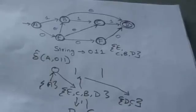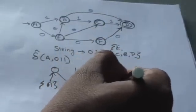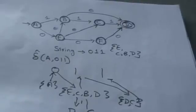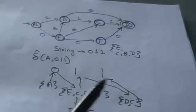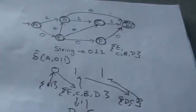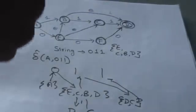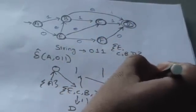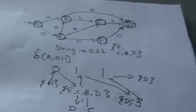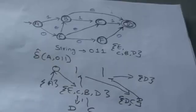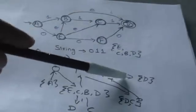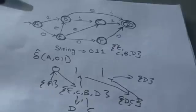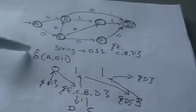Then we read the next input symbol 1 again. Apply 1 individually to 'd' and 'c'. For 'd' there is no transition for input symbol 1. For 'c' there is a transition to state 'd', so the output would be the set {d}. According to the rule, we find the epsilon closure of {d}. There is no empty transition for 'd', so its epsilon closure includes only state 'd'.